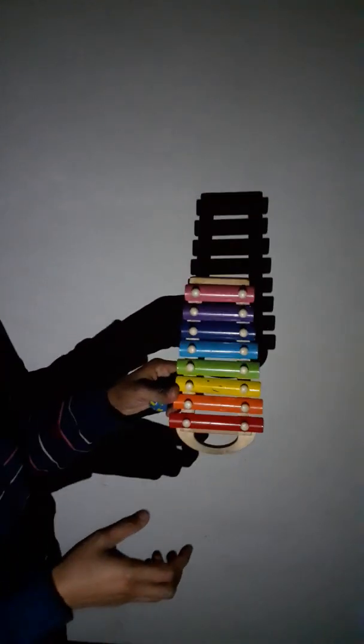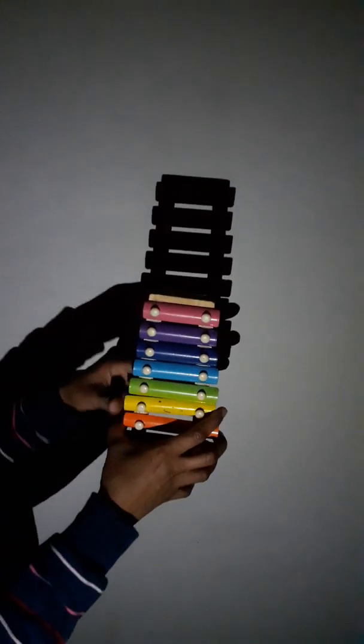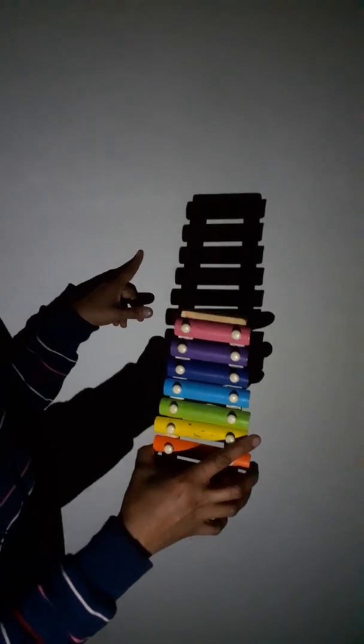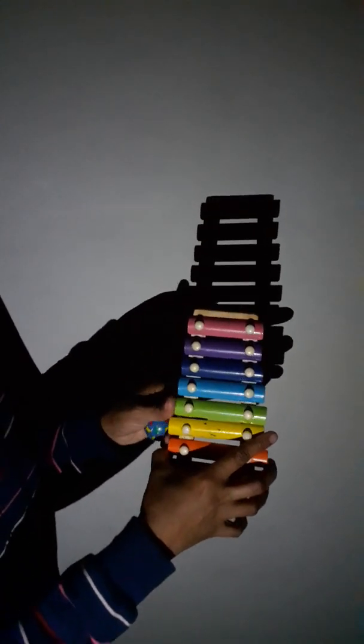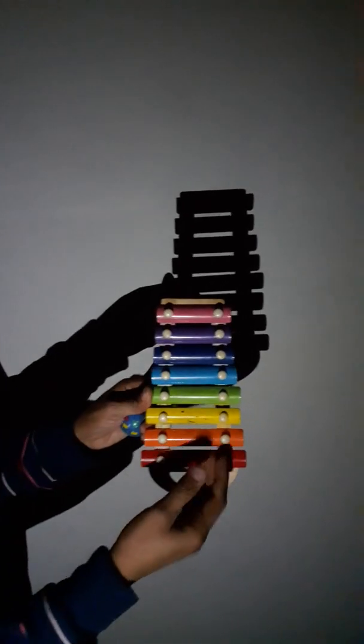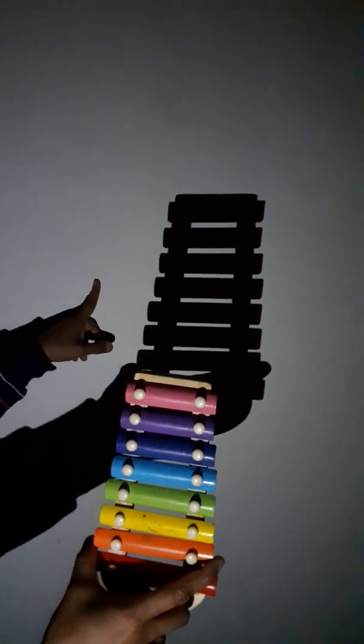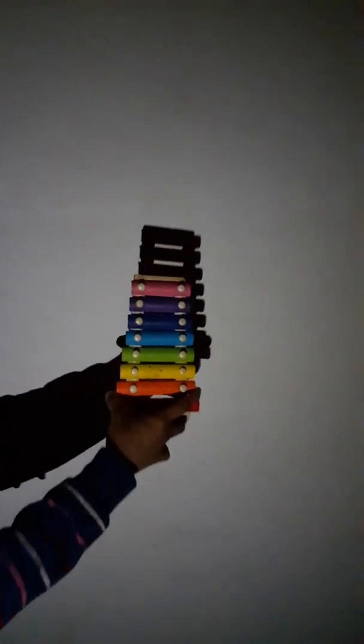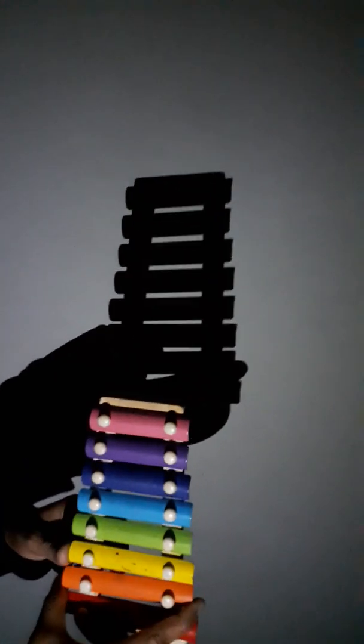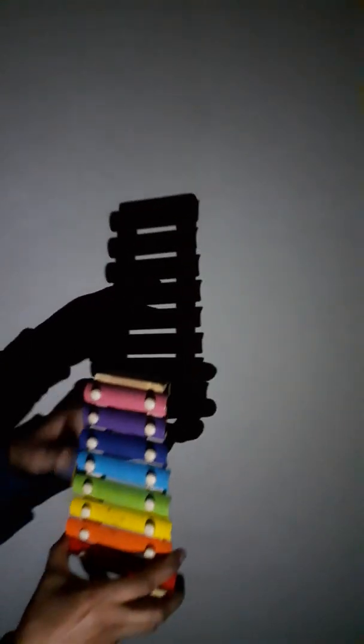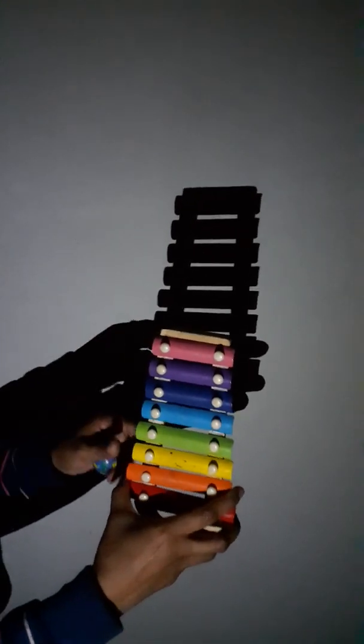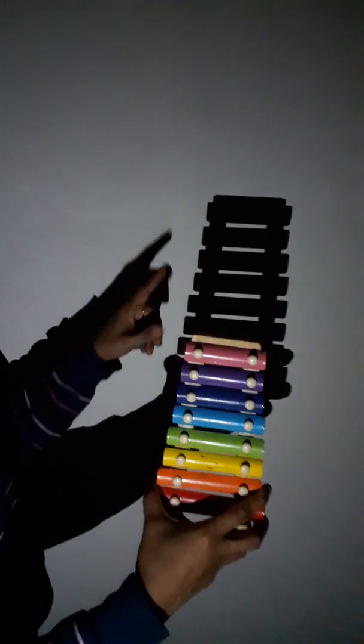Let's recapitulate the characteristics. Shadows are always black in color. We cannot determine the shape, size, and color of the actual object from the shadow. Shadows can reduce or increase depending on the position of the object between the light source and the screen. Shadows are always erect and real.